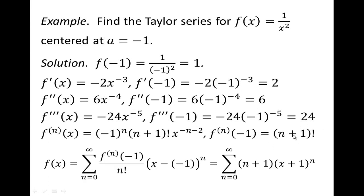We throw everything into our formula. The nth derivative evaluated at negative one is (n+1)!. We divide that by n factorial. And instead of x to the n, we have x minus negative one to the n, which is (x+1) to the n. So (n+1)! divided by n! reduces to just n+1, giving us a coefficient of (n+1) times (x+1) to the n.